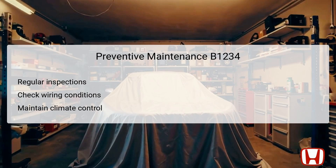To prevent future occurrences of DTC B1234, implementing a routine maintenance schedule is essential. Regular inspections of wire connections and physical components can help identify issues before they escalate. Frequently check the condition of wires leading to the air mix control motor and climate control unit — frayed or damaged wires should be promptly dealt with. Maintaining the HVAC system can enhance its overall performance, prolonging the life of essential components. Ensuring that filters are clean and the system is serviced in line with manufacturer recommendations contributes to optimal operation.